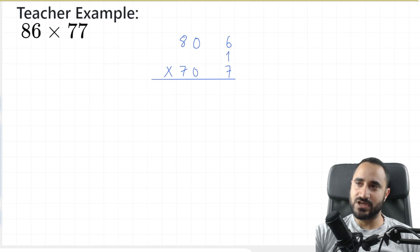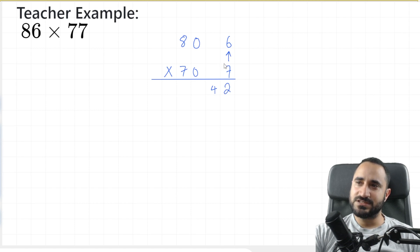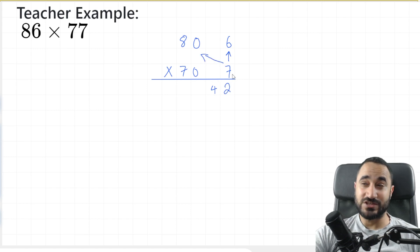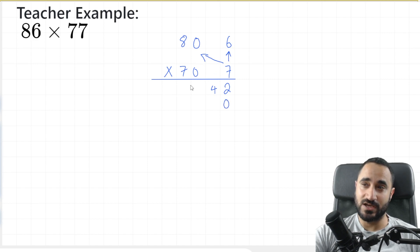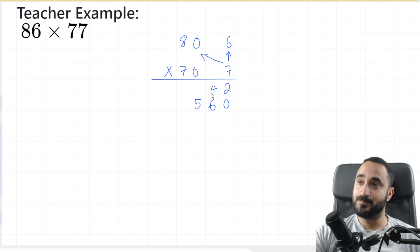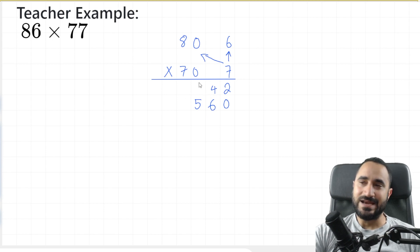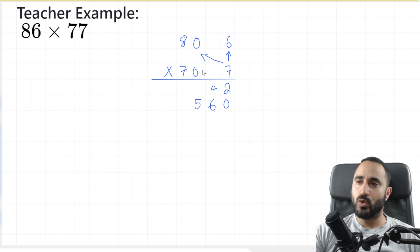So I'm going to do 7 times 6, which is 42, and I'm going to write that here. 7 times 80 — which is the same as 7 times 8 with a 0 at the end — so I'm going to put my 0 first and do 7 times 8, which is 56, and I'm going to write that here. Now that this 7 has multiplied onto everything, we're done with it.